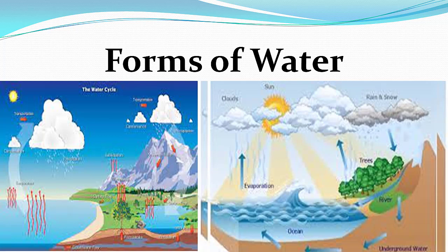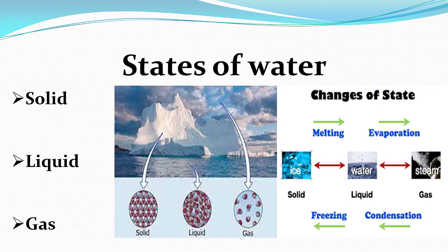Water is found in different forms like rivers, seas, oceans, lakes, snow, rain, glaciers, and ice caps. Water is found in all states of matter. It is found in solid form like snow, glaciers, and ice caps. It is also found in liquid form like rivers, seas, oceans, and rainfall.